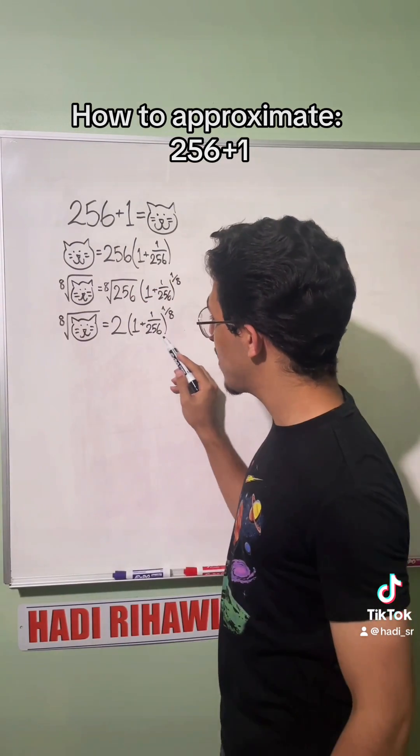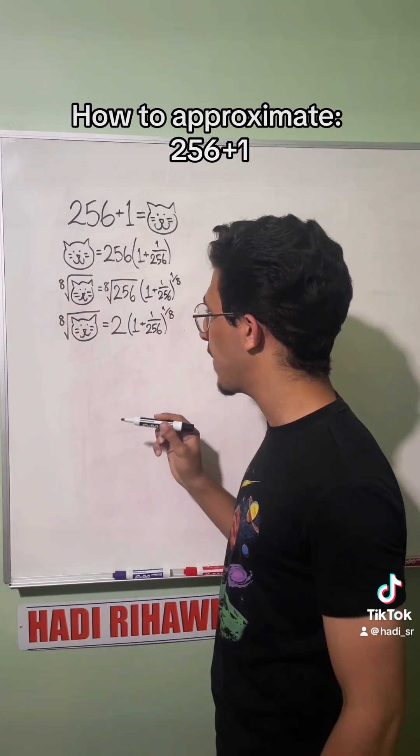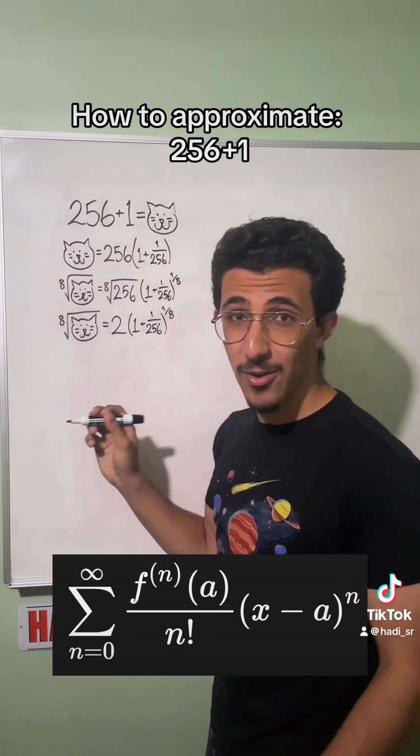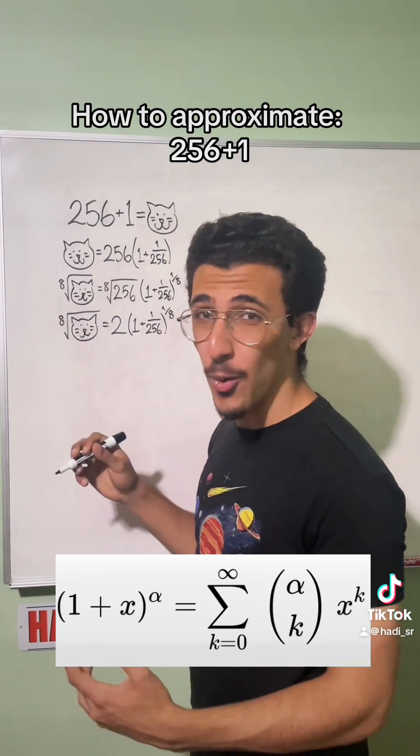And now we have this irrational number over here: one plus one over 256 to the one eighth power. In order to find this, we're actually going to use a Taylor series, or also known as the binomial series.